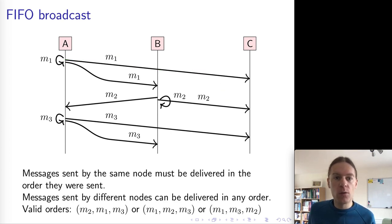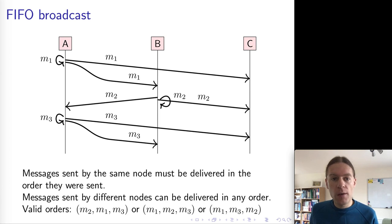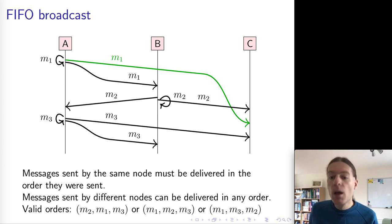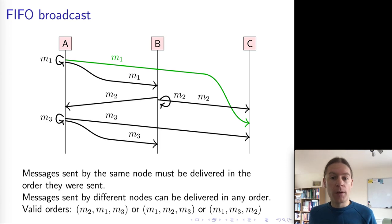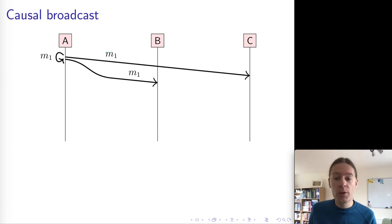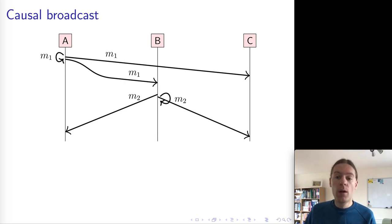If you want causal ordering — where M2 happening after M1 in a causal sense requires M2 to be delivered after M1 — you need causal broadcast. Causal broadcast ensures that messages are delivered in causal order, meaning that if the broadcasting of one message happened before the broadcasting of another in the sense of the happens-before relation, then those messages must be delivered in the order that matches the happens-before relation.